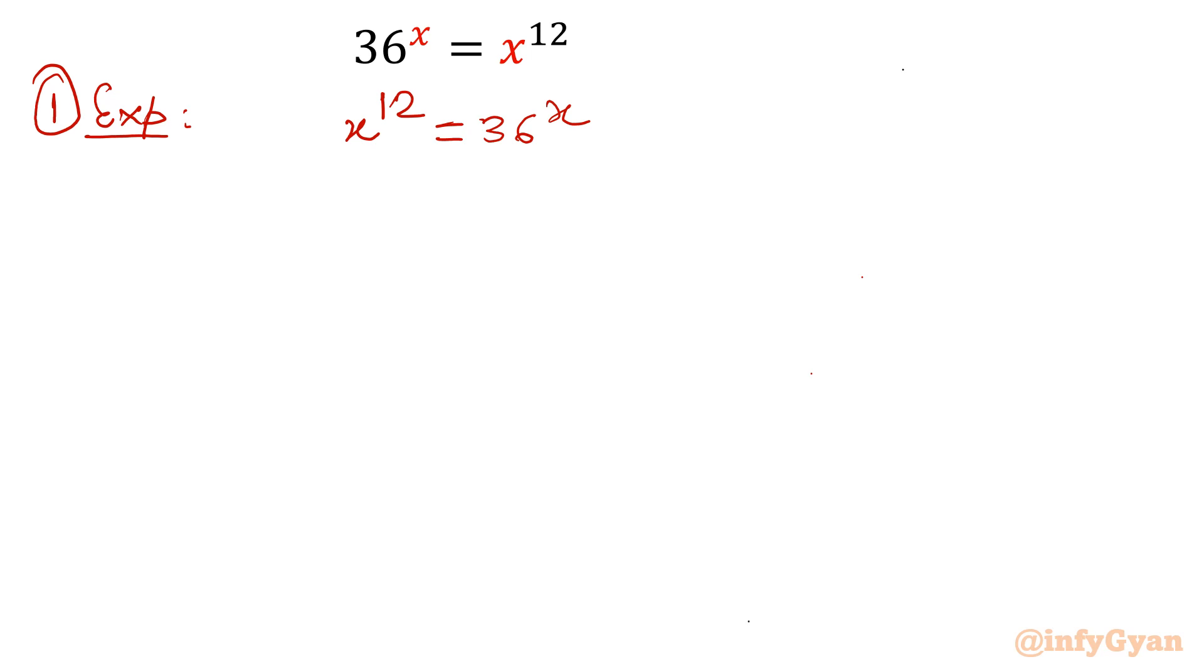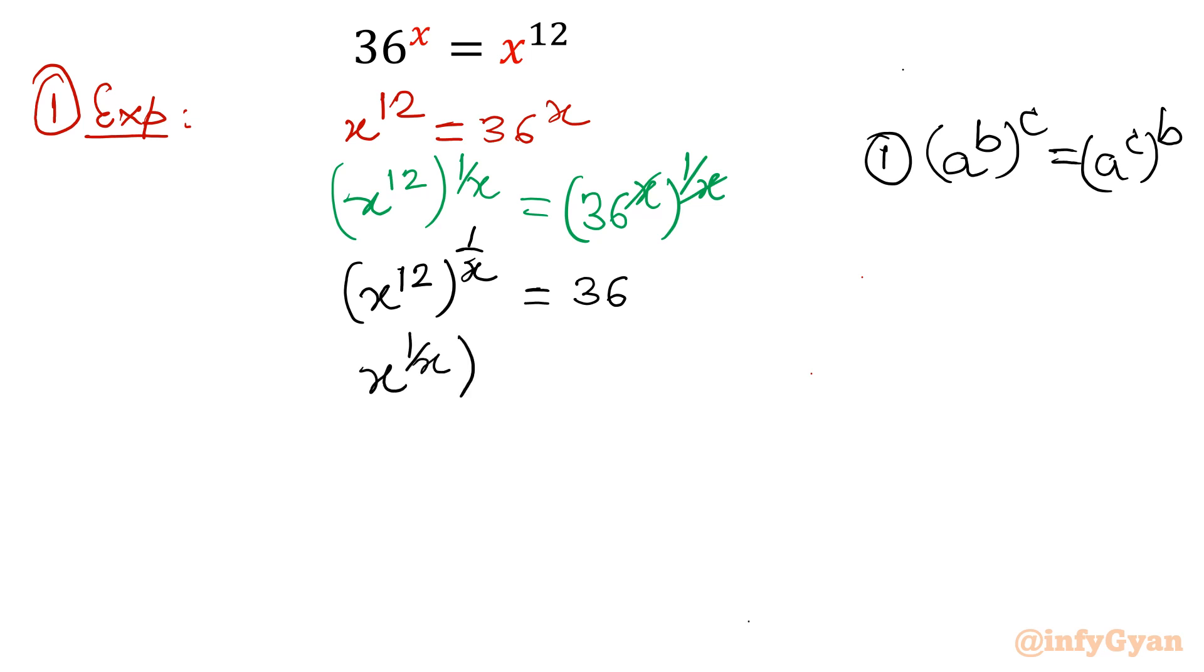So I will write x power 12 whole power 1 over x equal to 36 power x whole power 1 over x. This x will get over. So we will get x power 12 whole power 1 over x equal to 36. Now I will use one exponent property or law. It is a power b whole power c. We can write any time a power c whole power b.